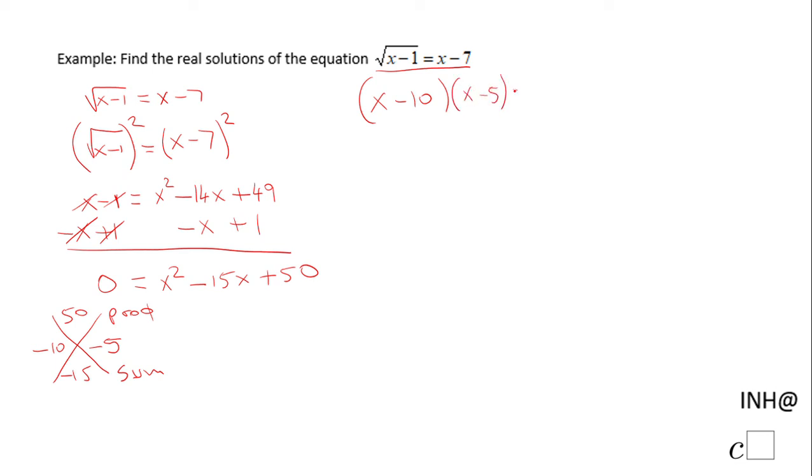We can use the zero product property and make each factor equal to 0. x minus 10 equals 0 and x minus 5 equals 0. If we solve each equation we end up with x equals 10 and x equals 5.